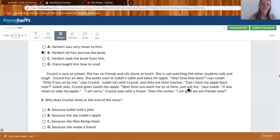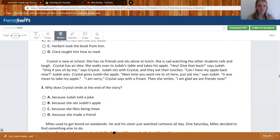Crystal is new at school. She has no friends and sits alone at lunch. She is sad watching the other students talk and laugh. Crystal has an idea. She walks over to Judah's table and takes his apple. Hey, give that back, says Judah. Only if you sit by me, says Crystal. Judah sits with Crystal and they eat their lunches. Can I have my apple back now, Judah asks. Crystal gives Judah the apple. Next time you want me to sit here, just ask me, says Judah. It was mean to take my apple. I am sorry, Crystal says with a frown. Then she smiles. I am glad we're friends now.